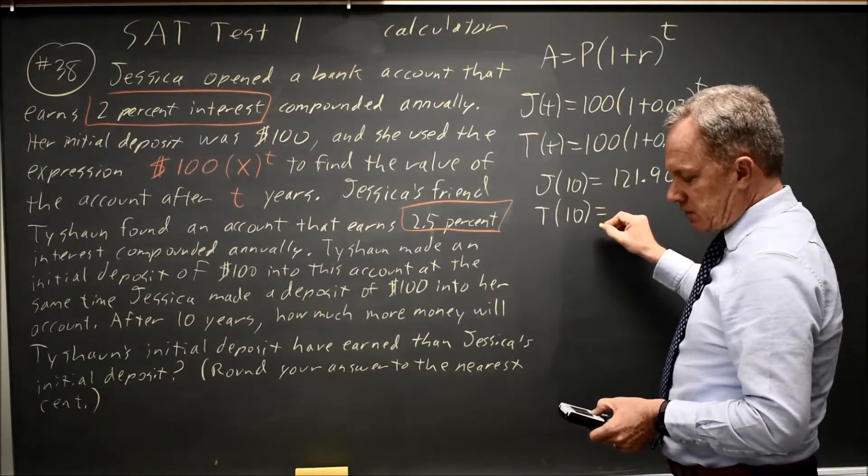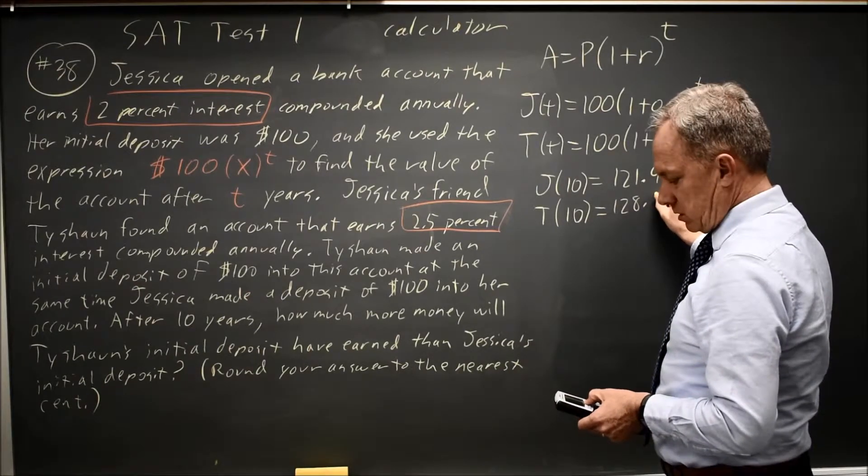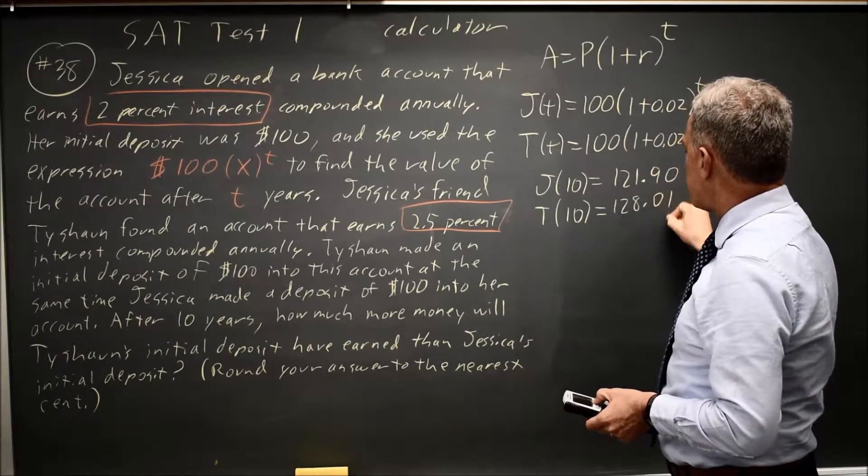Tyshawn at 10 years has $128.008, which rounds to $128.01.